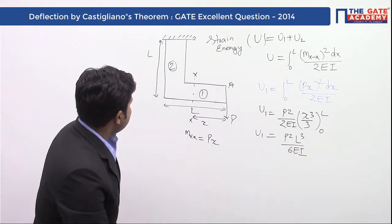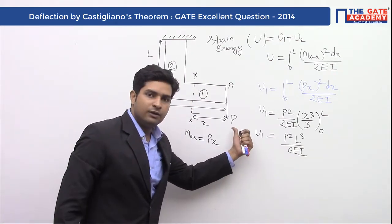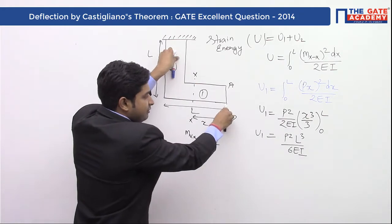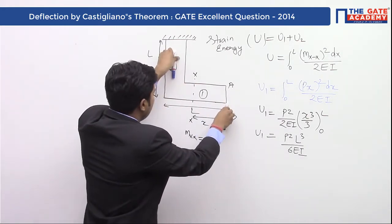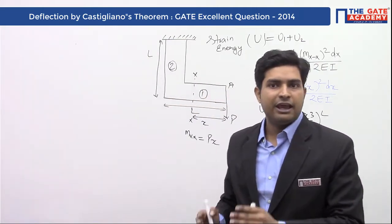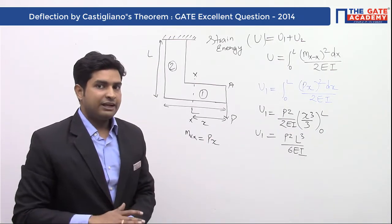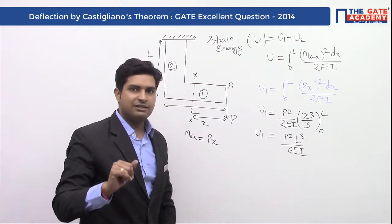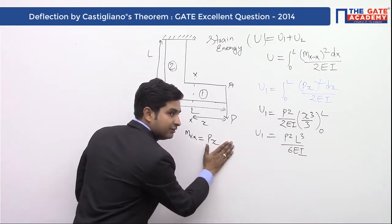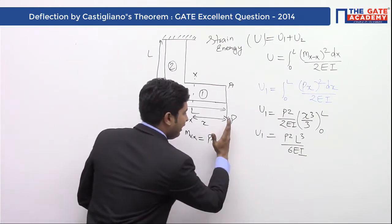Now we find out the strain energy for the second part. For the second part, the load P is parallel to the longitudinal axis and away from the longitudinal axis. So for the second part, P is an eccentric axial load, and due to eccentric axial load two types of loads will act: one is axial load and the second is bending moment. The bending moment in this part is constant, not varying as in part one. The constant bending moment magnitude is P times L.